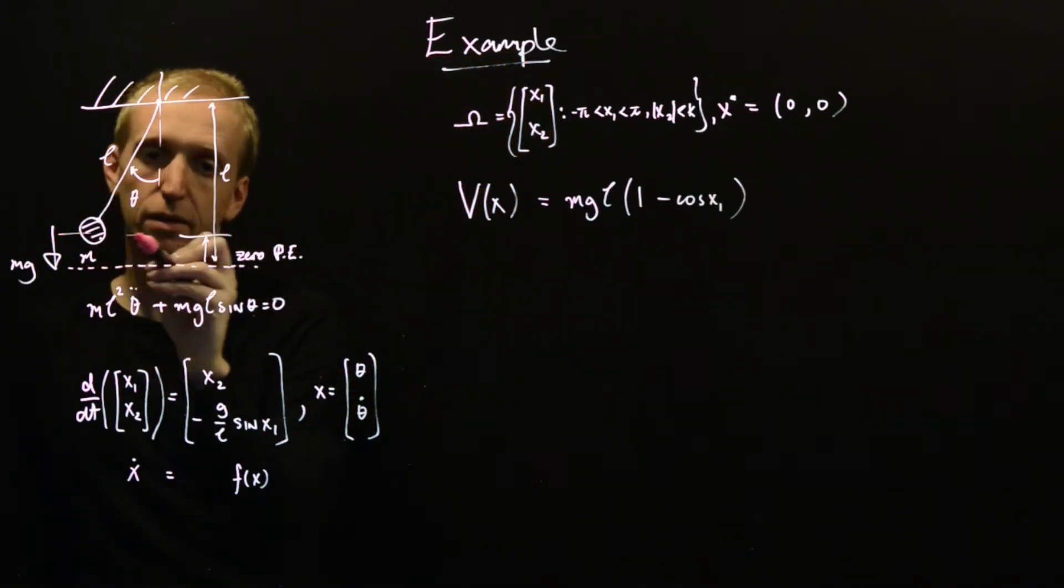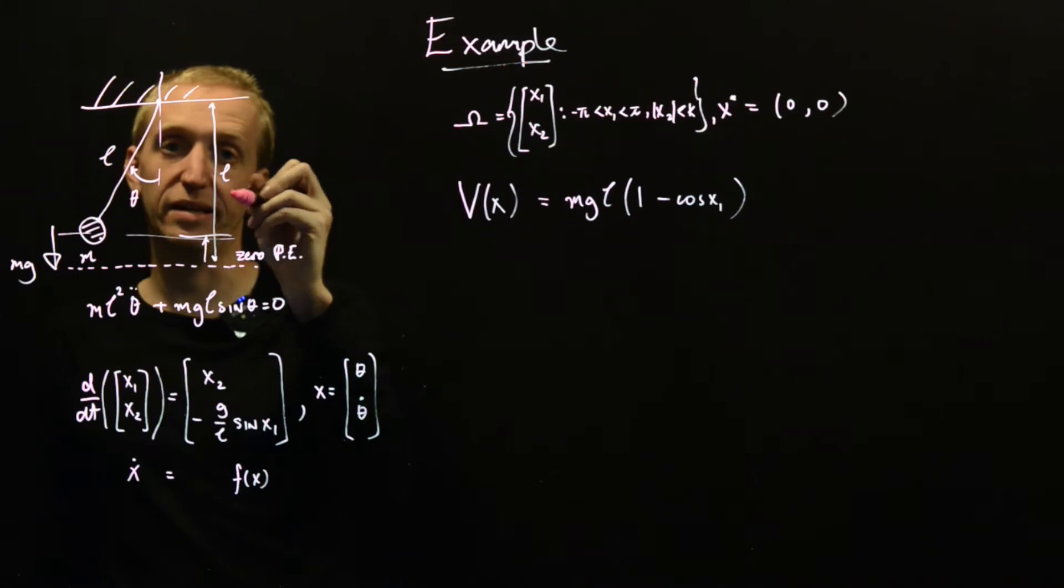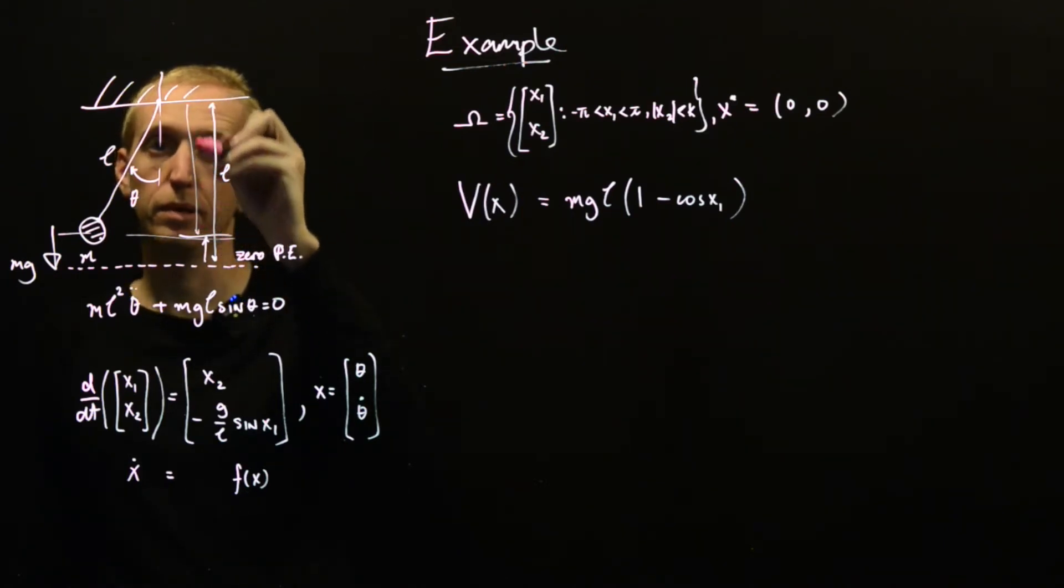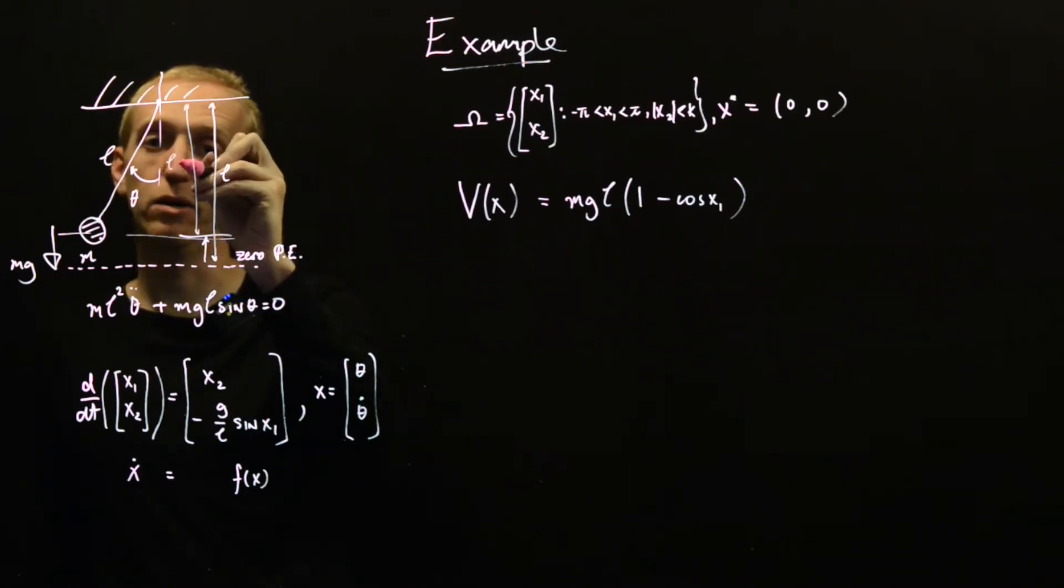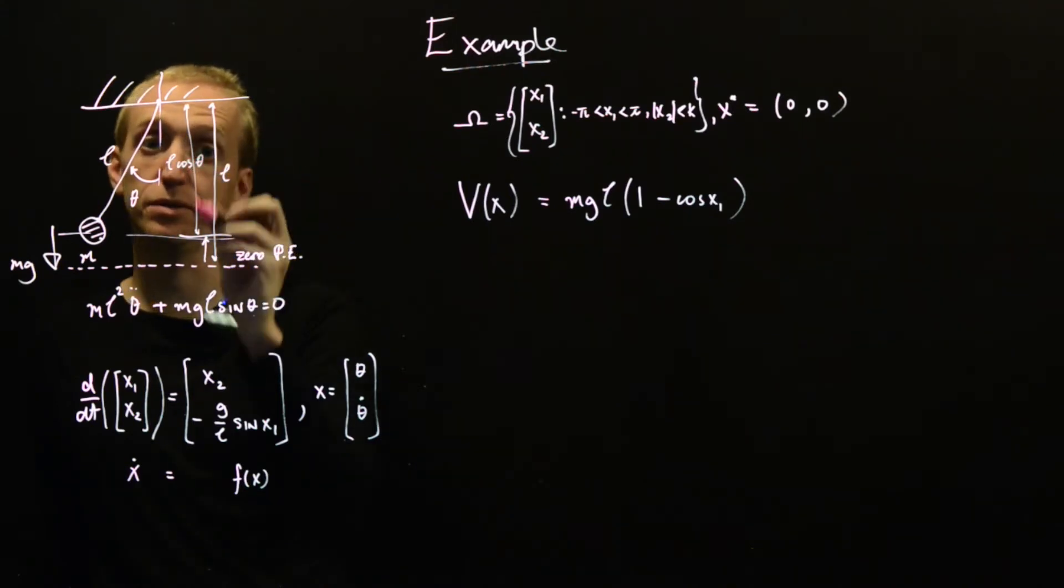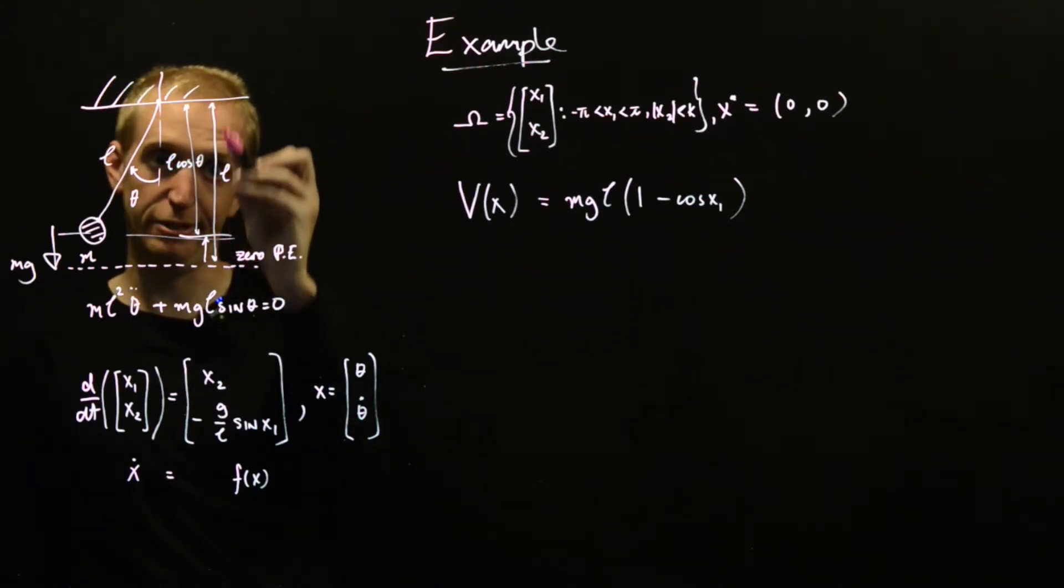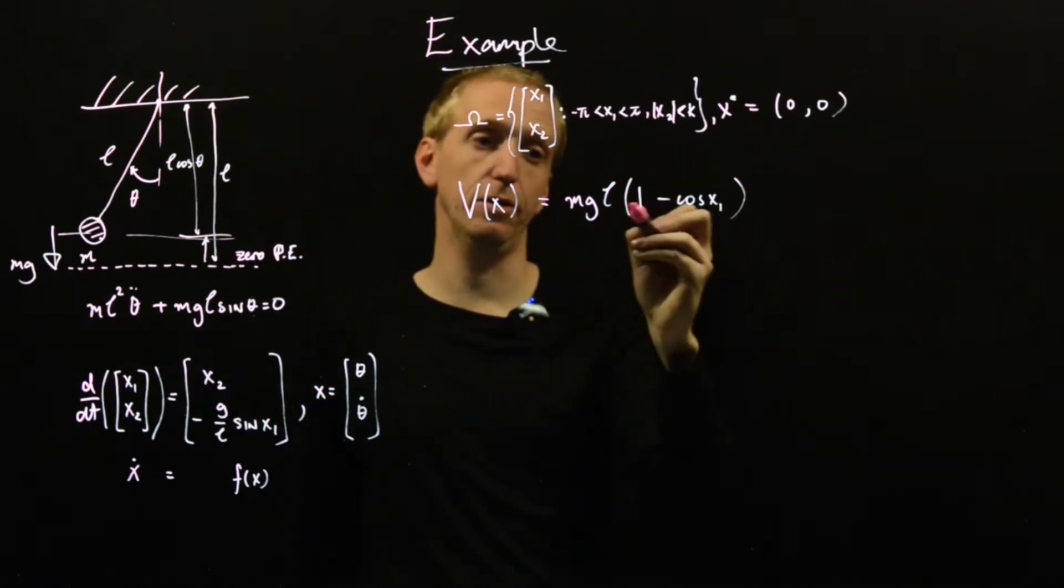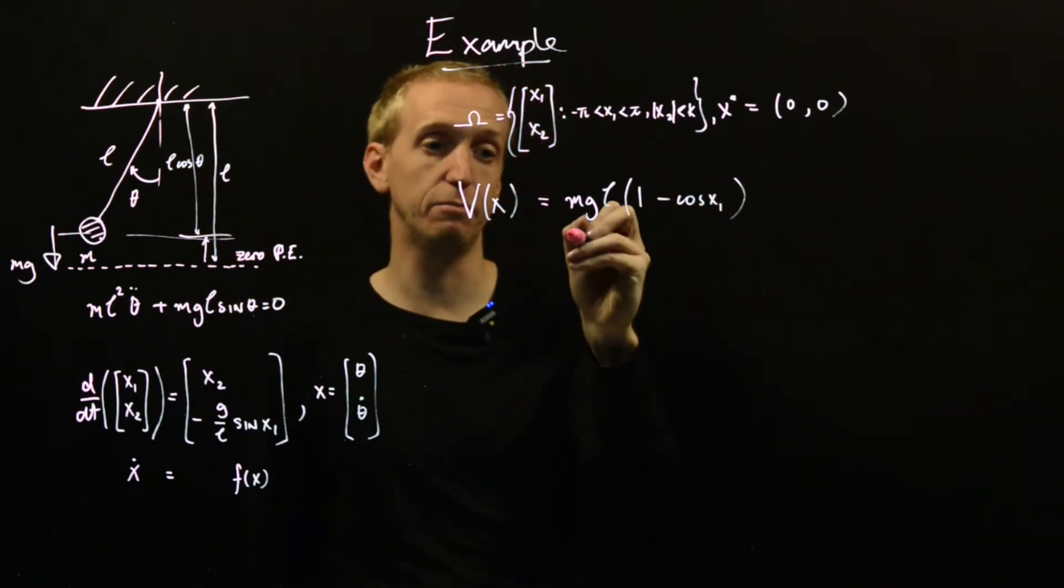So the idea is that this is a length L below. So if the pendulum is in the downward position, if it's in the equilibrium position, then we're at the point of zero potential energy. So what is the potential energy of this setup? Well, it's equal to MgL 1 minus cos of x1. So how can we see that? Well, this length here is just L cos theta, which is L times cos of x1. This length here is L. So we get L times 1 minus cos x1. This is the potential energy.